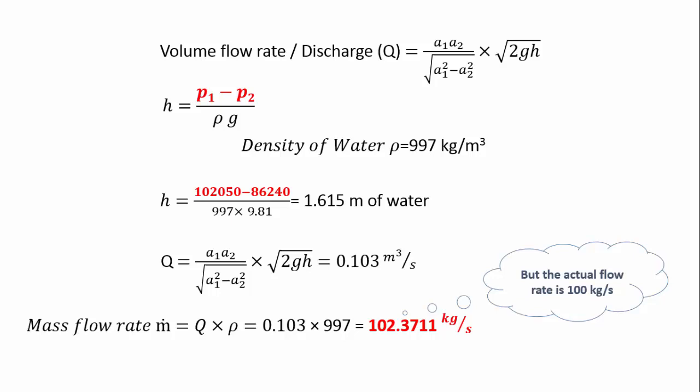The final learning from this experiment is that the mass flow rate through any pipeline can be calculated by fitting a VentureMeter in between the pipeline and by measuring the pressure difference. Now, we have simulated the same using the CFD package ANSYS Fluent. Thank you.